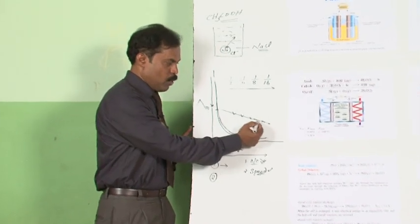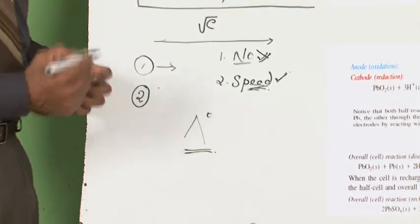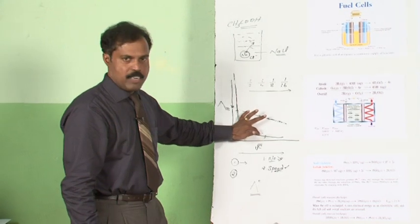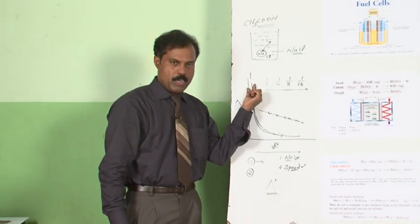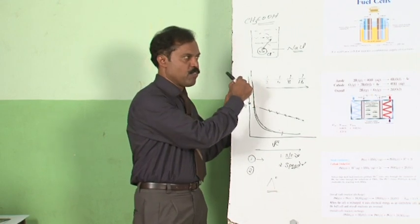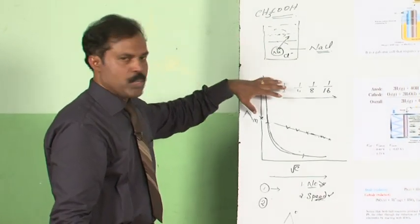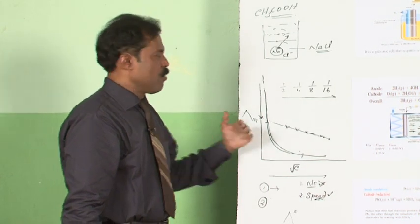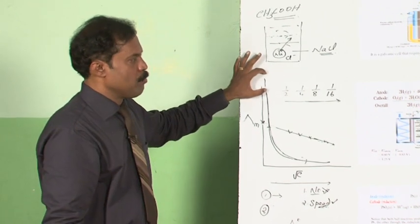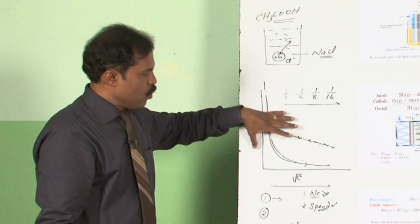For strong electrolytes, the molar conductivity reaches a maximum value, which is represented as lambda infinity. Now the question is: is it possible to find out the molar conductivity at infinite dilution for a weak electrolyte? As you can see from the graph, it cannot be measured because it is not reaching a maximum value. Experimentally it is also very tough to find out the molar conductivity at infinite dilution of a weak electrolyte, because as the solution is diluted further, conductivity keeps decreasing, and at very high dilution the value of conductivity is so low that experimental measurement becomes extremely difficult.